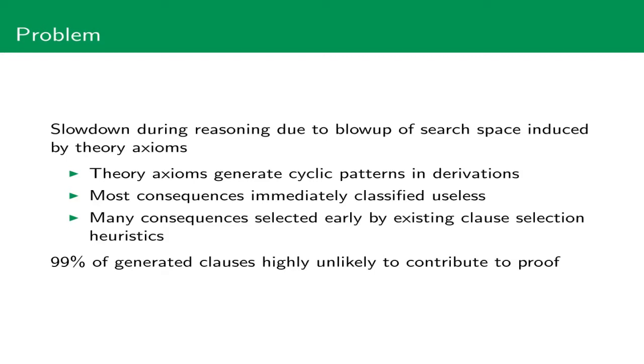The problem here is that the theory axioms can repeatedly be combined with themselves or with other axioms and then generate cyclic patterns in the derivations. Most of the consequences generated this way would be immediately classified as useless by humans. To make the problem worse, many consequences are also early selected by existing clause selection heuristics. And as a result, more than 99% of the generated clauses are highly unlikely to contribute to the proof.